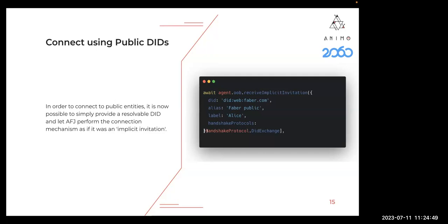With implicit invitations, you put in the DID, set an alias and handshake protocol, and the agent does all the work to resolve the DID and create the connection. It works from both sides: if you have a public DID, you will receive the connection request and can decide whether to accept it and move forward.